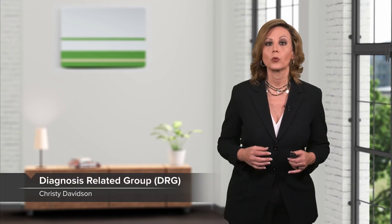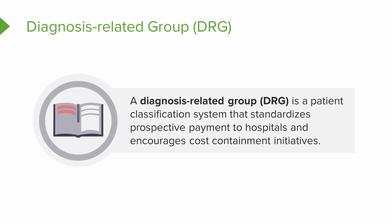Welcome back everyone. Fiscal responsibility is an important aspect of organizational management. Understanding reimbursement starts with learning about diagnosis-related groups. A diagnosis-related group, or a DRG, is a patient classification system that standardizes prospective payments to a hospital and encourages cost containment initiatives.